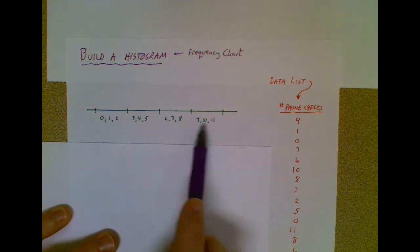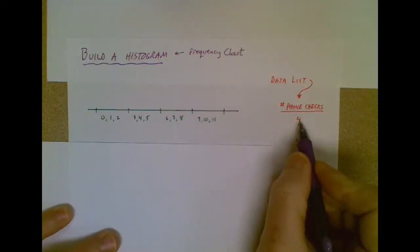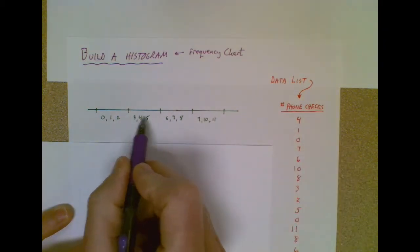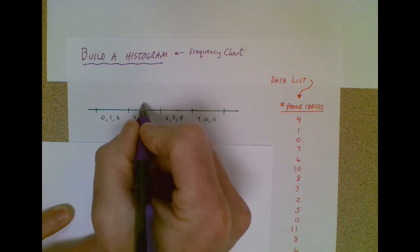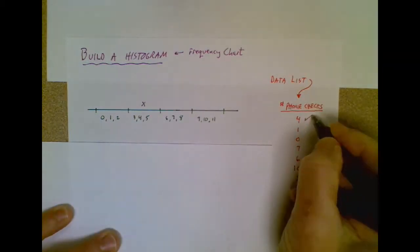And then three, four, five, six, seven, eight, nine, ten, eleven. If that's not making sense, this will. This person checked their phone four times during the hour, and this is the category for three, four, five checks. So I would simply put an X there. Now I've taken care of that person.